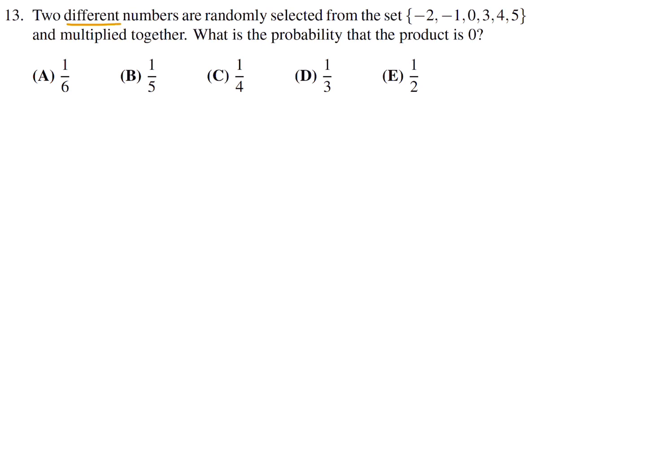Two different numbers are randomly selected from the set -2, -1, 0, 3, 4, 5, and multiplied together. What is the probability that the product is 0? We have to select 2. For the first one, we've got 6 choices. And because they have to be different, I've got 5 of the remaining to choose from for the second number. That is 30, so there's 30 possible sets.